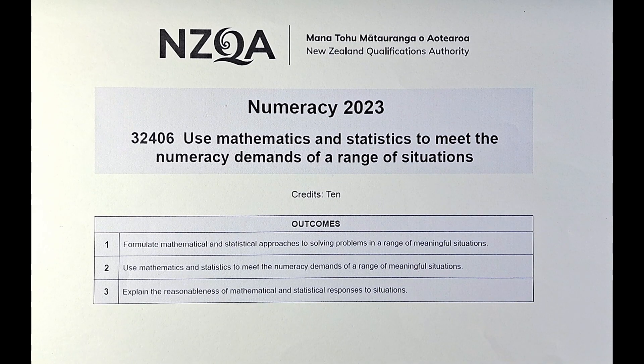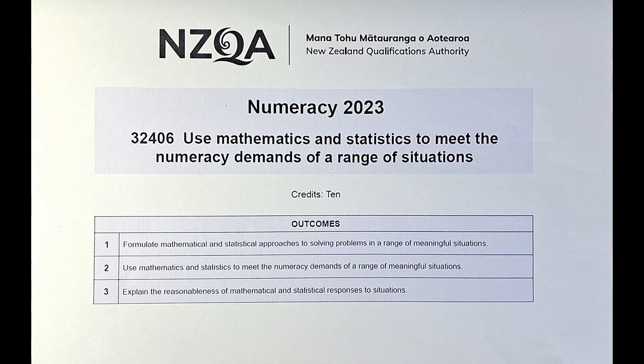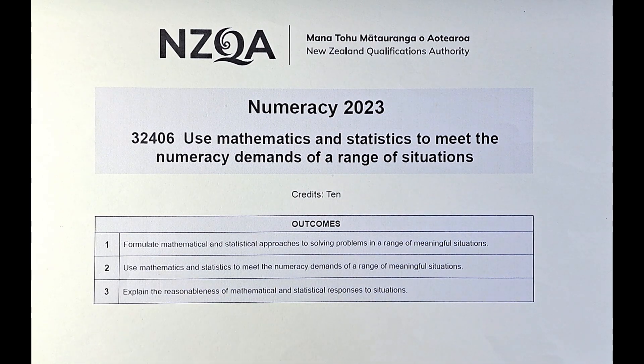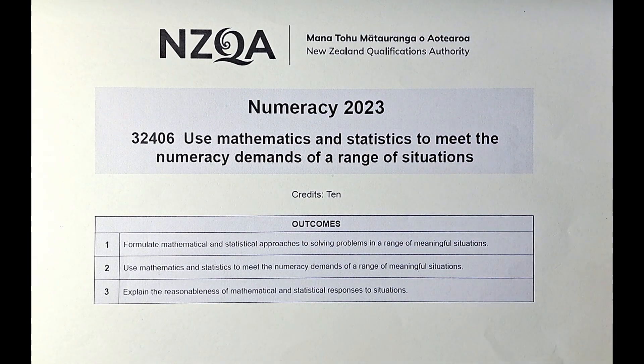If you get an achieved, you get 10 credits. If not, then you do not get any credit. To obtain the 10 credits, you need to satisfy three outcomes: 1, 2, and 3. That is a combination of outcomes throughout this paper, and you need to get a certain number of outcomes for each part.